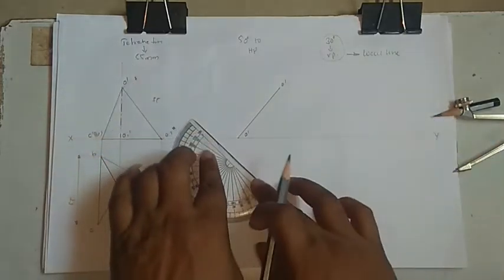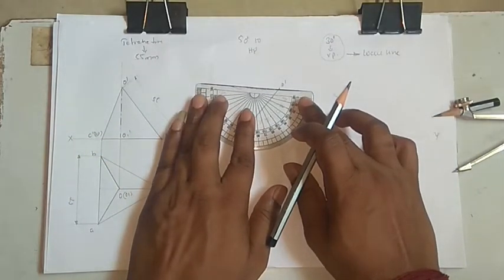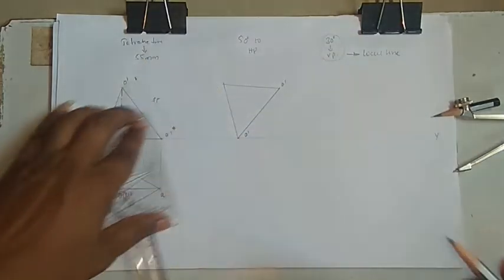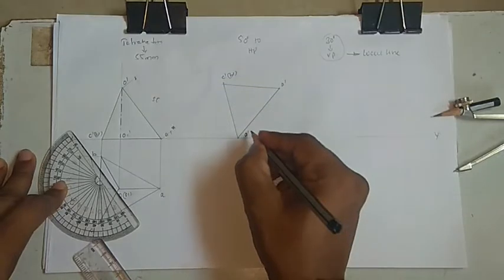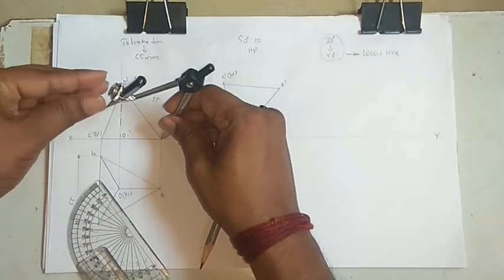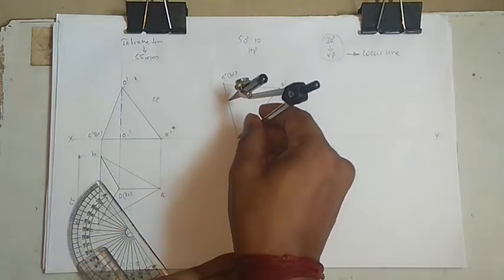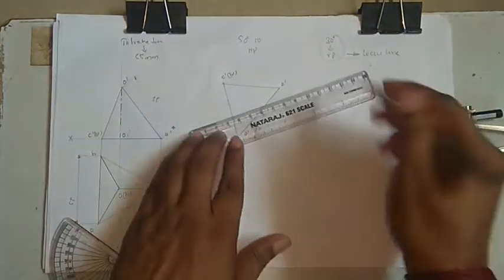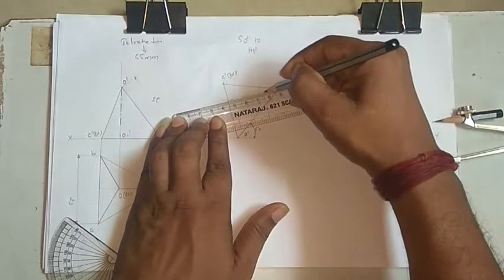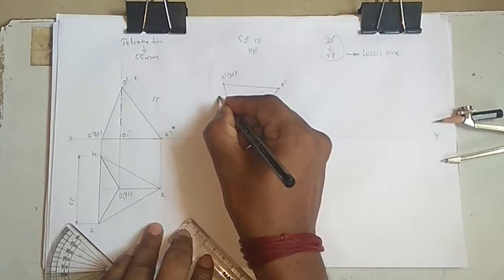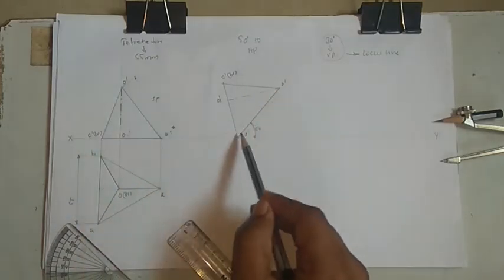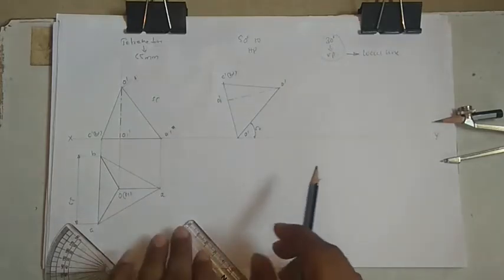From O-dash to B-dash, cut an arc and extend it. We get to O-dash at 50 degrees. Now look at O1 — from O, cut this arc to get O1-dash. We have taken the 50-degree line, cut O1 on it, and reconstructed the shape. Now take the projections.